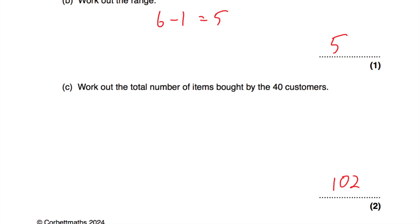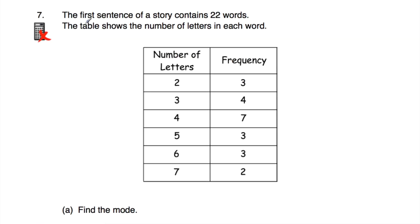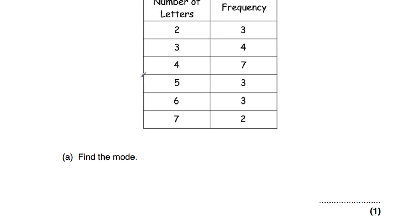Question number seven. The first sentence of a story contains 22 words. The table shows the number of letters in each word: 3 words have 2 letters, 4 have 3 letters, 7 have 4 letters, 3 have 5 letters, 3 have 6 letters, and 2 have 7 letters. Part A: find the mode. The highest frequency is 7, which corresponds to 4-letter words, so the mode is 4.